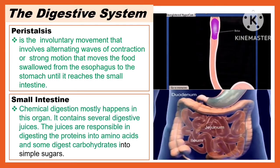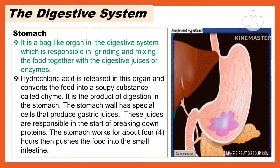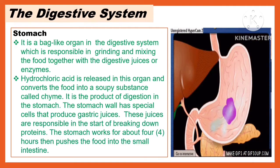Another part of the digestive system is the small intestine, where chemical digestion mostly happens. It contains several digestive juices responsible in digesting proteins into amino acids and some digest carbohydrates into simple sugar. Another part is the stomach, a bag-like organ responsible in grinding and mixing the food together with digestive juices or enzymes. Hydrochloric acid is released in the stomach and converts the food into a soupy substance called chyme. The stomach wall has special cells that produce gastric juices responsible in the start of breaking down proteins. The stomach works for about 4 hours then pushes the food into the small intestine.